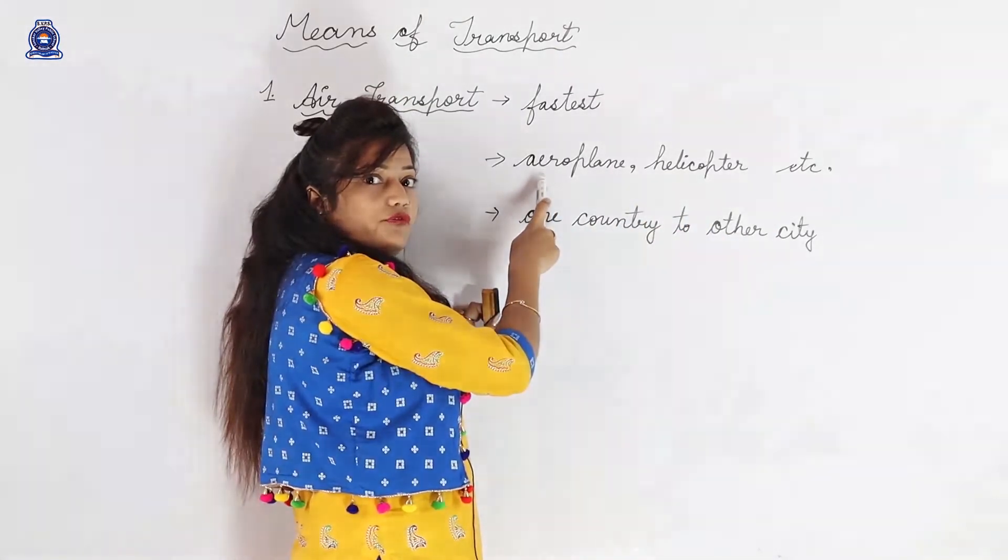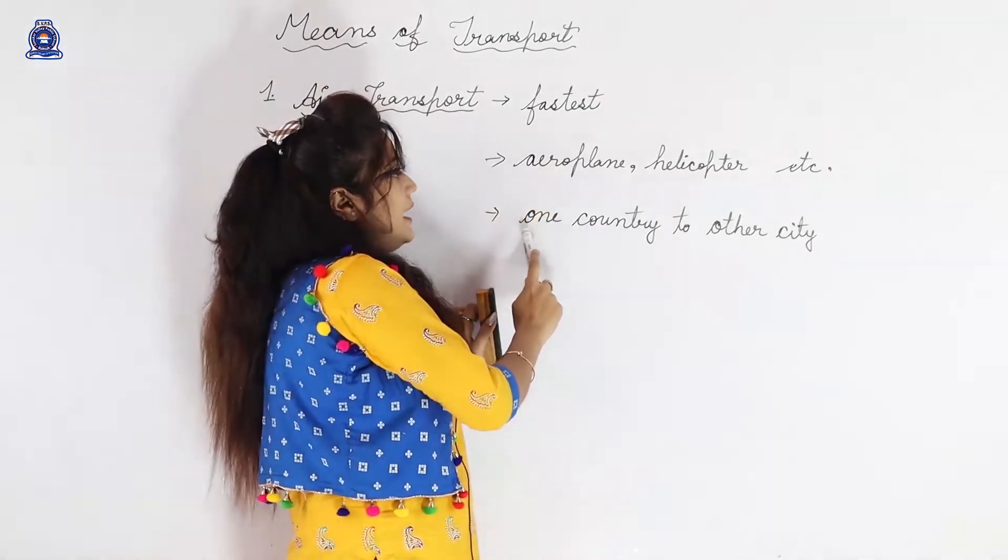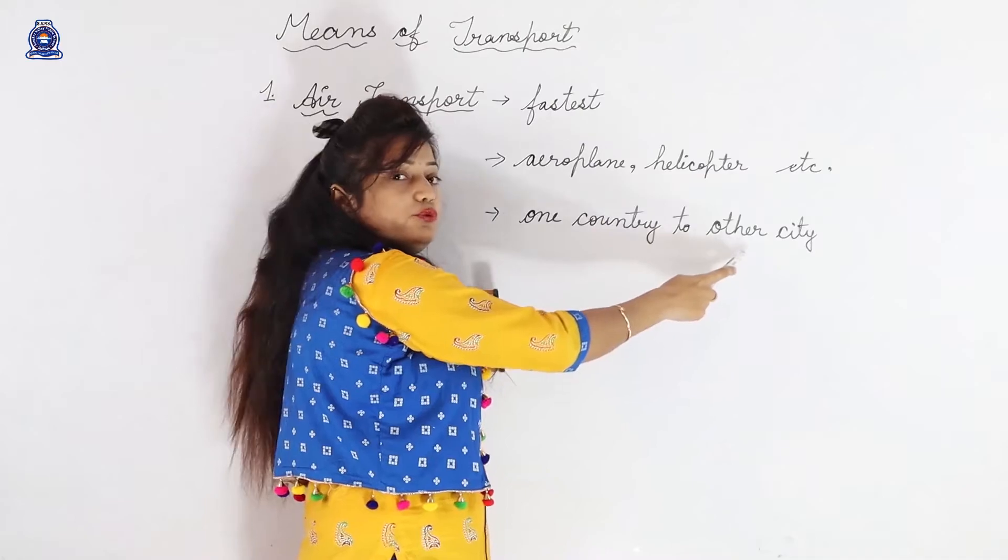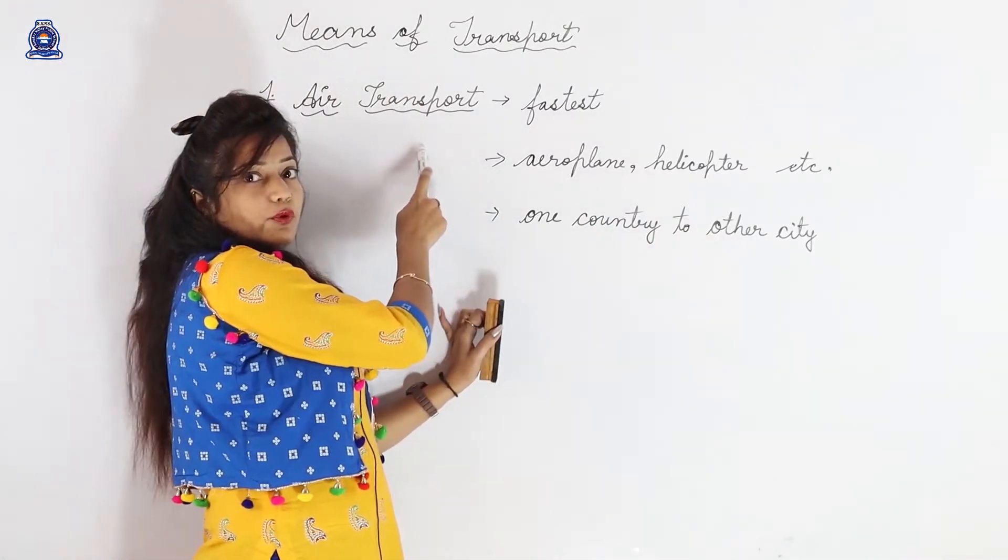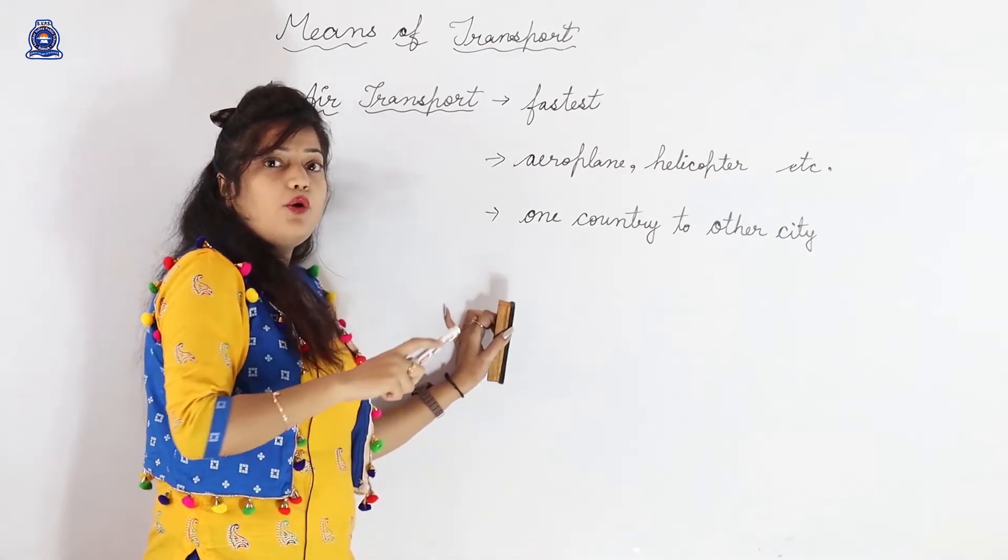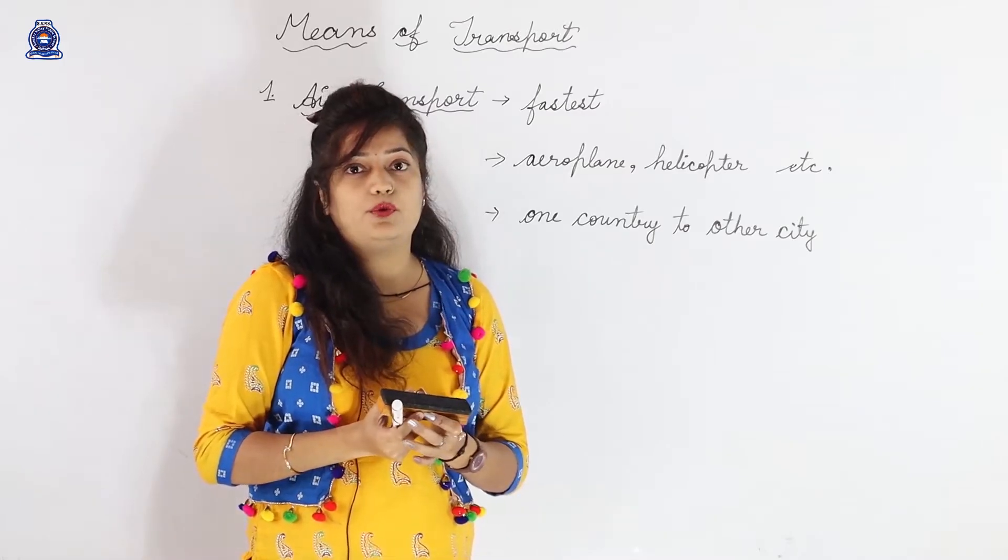Aeroplane takes off and lands only at the airport. And if I want to go one country to other country, then we will use air transport. Now let's have a look on the examples of air transport.